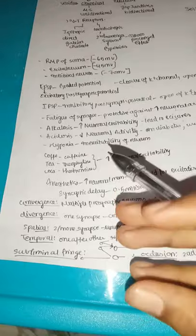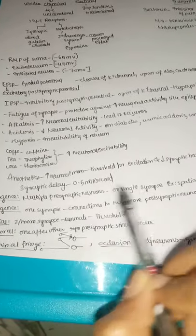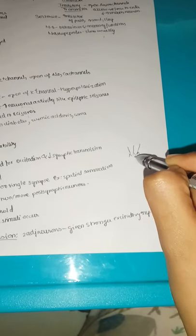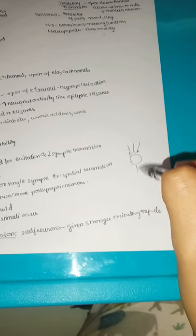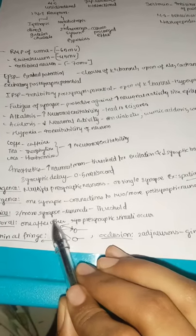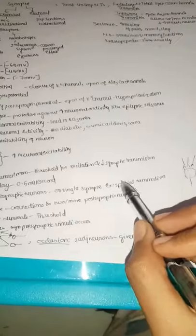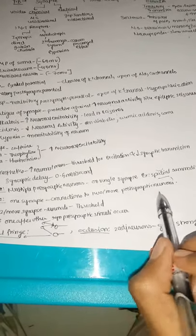Important synaptic properties: convergence is where multiple presynaptic neurons synapse on a single neuron — seen in spatial summation. Spatial summation is where two or more synapses unite together to form a threshold in a specific neuron. Divergence is where one synapse connects to two or more postsynaptic neurons.